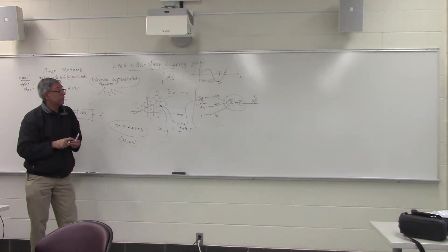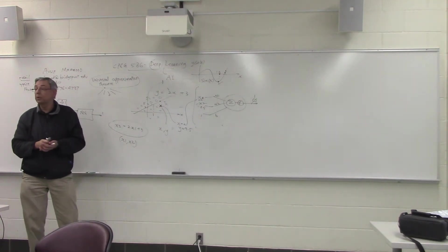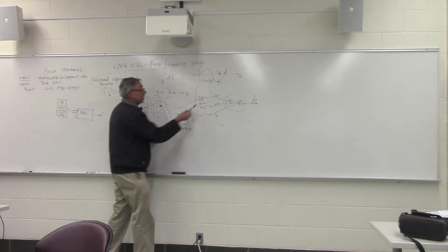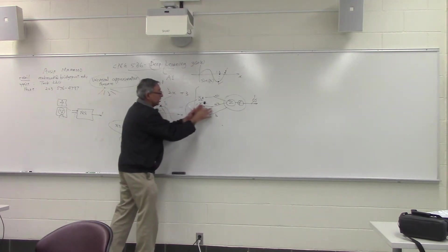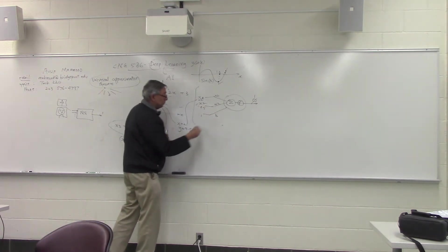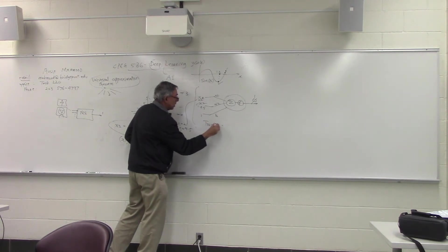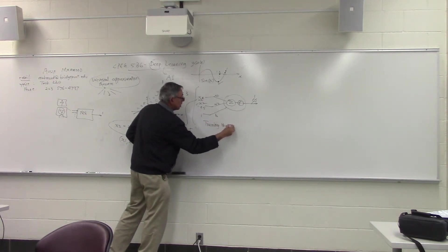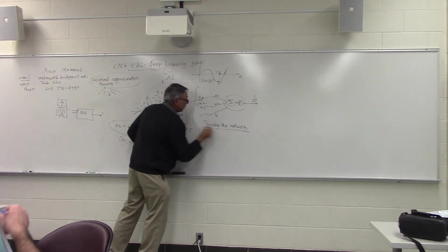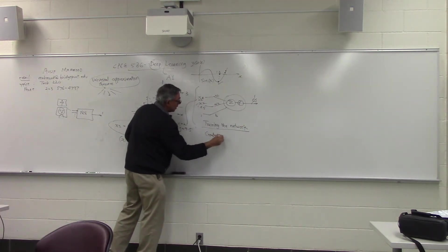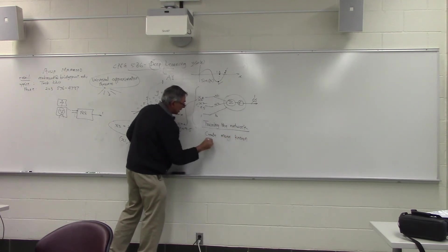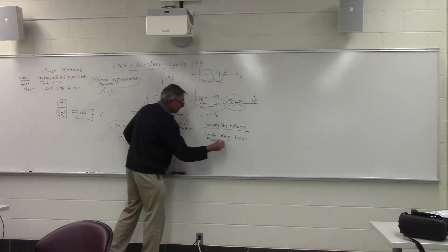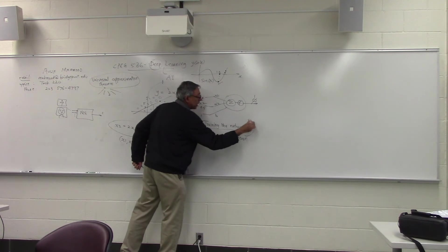The goal of designing this neural network is to come up with a training algorithm such that we give it a lot of examples. When we are training the network, we create many known examples — known meaning we know what the expected output is going to be. So the expected output is known.